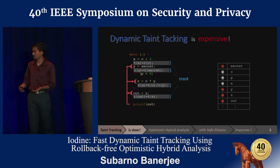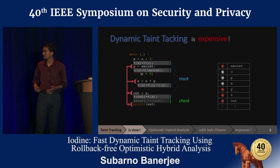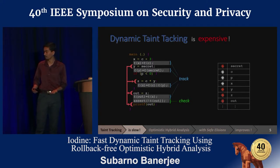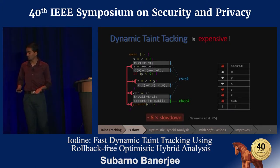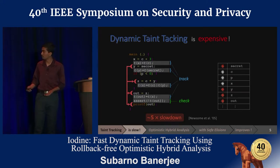Additionally, since the tainted value out can reach the sink — that is, the print statement — the analysis has to check the taint of out before performing this operation. All this additional work amounts to huge slowdowns, primarily due to the metadata tracking operations.